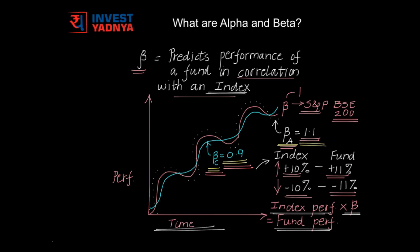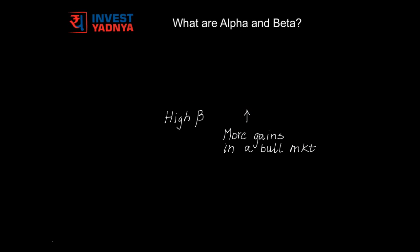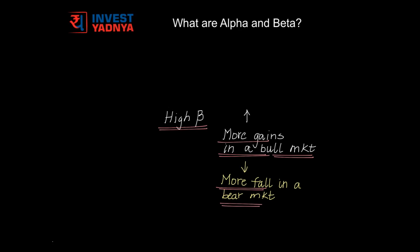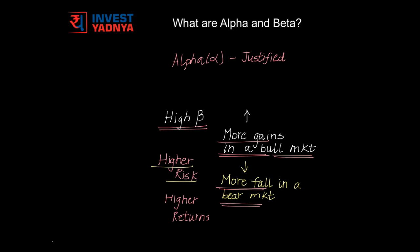Just a reminder after studying beta: none of the performance parameters should be seen in isolation. They should be seen together to evaluate whether you should go for a particular fund or not. A higher beta value indicates that a fund would gain more than the index in a bull market and it would fall more in a bear market. If a fund is taking higher risk, it would be justified only if it produces higher returns.